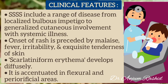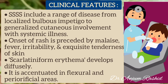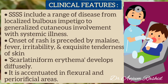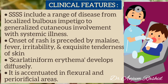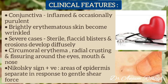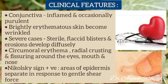The clinical features of Staphylococcal scalded skin syndrome include a range of diseases from localized bullous impetigo to generalized cutaneous involvement with systemic illness. Onset of rash is preceded by malaise, fever, irritability, and exquisite tenderness of the skin. A scarlatiniform erythema develops diffusely, accentuated in flexural and periorificial areas. The conjunctiva is usually inflamed and can become purulent. Brightly erythematous skin becomes wrinkled, and in severe cases, sterile flaccid blisters and erosions may develop diffusely.